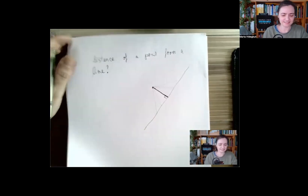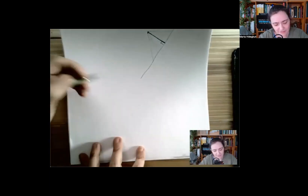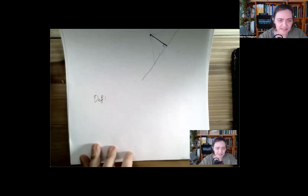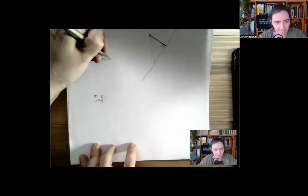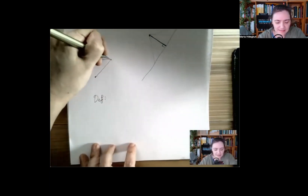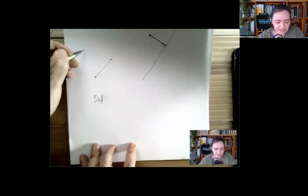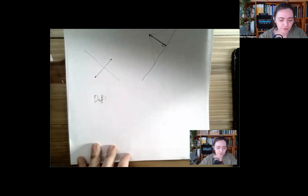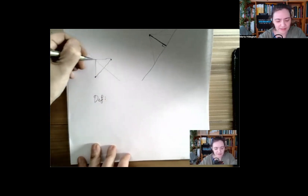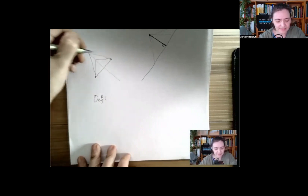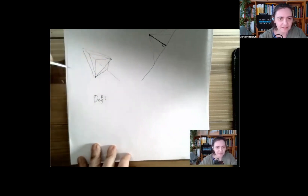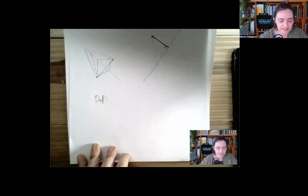That's one thing. The next definition: you remember the perpendicular bisector — it goes through the midpoint and it's perpendicular to the line segment. But the definition was a strange one: the set of all points equidistant to the endpoints of the line segment. There's going to be something very similar to this.